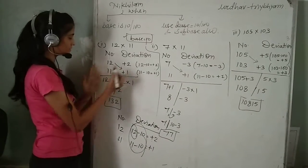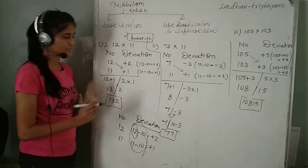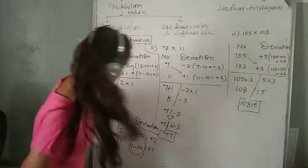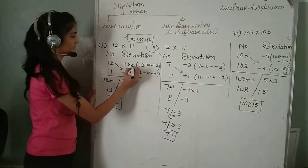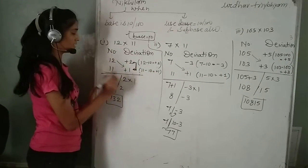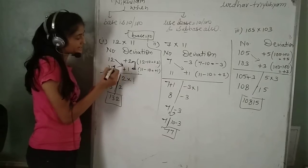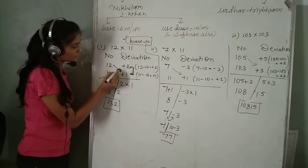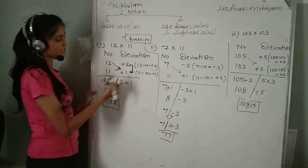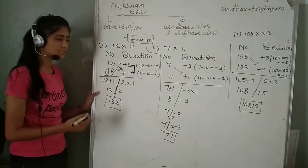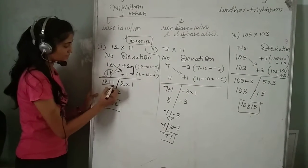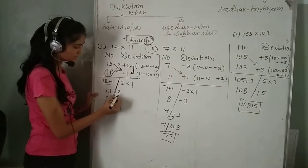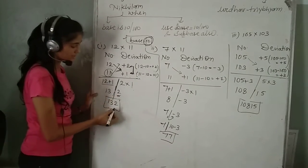We write the deviation in front of each number. Now, first we take the product of the deviations: 2 multiplied by 1 equals 2. Second step, we take the opposite deviation and add it to the number: 12 plus 1 equals 13, or alternatively 11 plus 2 equals 13. Both are correct. So we get 13 and the product of deviation is 2, giving 132. Since the base is 10, we keep only one digit at the units place. The answer is 132.